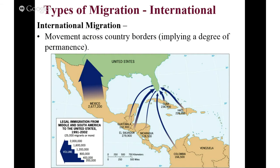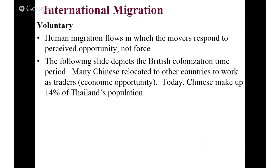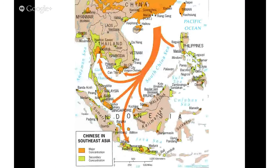Nothing inside of a country is international migration — it must happen from one country to another. There are two types of international migration: voluntary and forced. Voluntary is as it sounds — somebody is moving to another country for an opportunity. In this slide, you see Chinese people under British control in the late 1700s and 1800s relocating from mainland China to periphery islands to serve as port workers. This was their choice to better themselves economically, so this is voluntary migration.